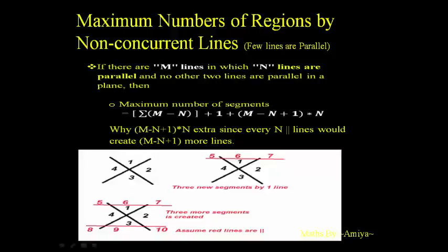For example, with 4 lines of which 2 are parallel and 2 are not: first work on the 2 non-parallel lines, which create 4 regions. Then placing each parallel line creates 3 more regions (2 non-parallel lines + 1). Placing both parallel lines gives 3 + 3 = 6 new regions, for a total of 10 regions.